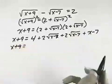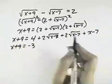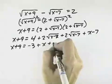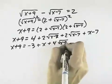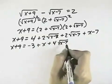So I have x plus 9 equals 4 minus 7 is negative 3, plus x, plus 4 times the square root of x minus 7. So I want to get 4 times the square root of x minus 7 by itself to eliminate that radical.